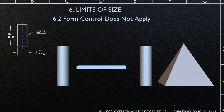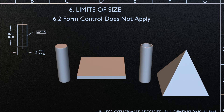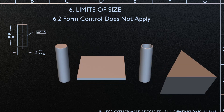When form control does not apply: the controlled geometric form prescribed by limits of size does not apply to the following. Stock, such as bars, sheets, tubing, structural shapes, and other items produced to established industry or government standards that prescribe limits for straightness, flatness, and other geometric characteristics. Unless geometric tolerances are specified on the drawing of a part made from these items, standards for these items govern the surfaces that remain in the as-furnished condition on the finished part. Parts subject to free state variation in the unrestrained condition will be discussed in the following video.